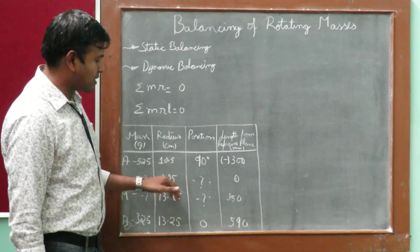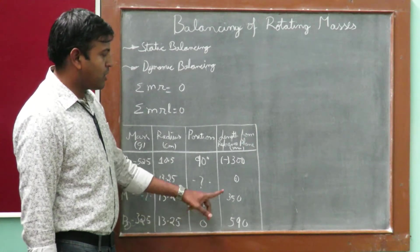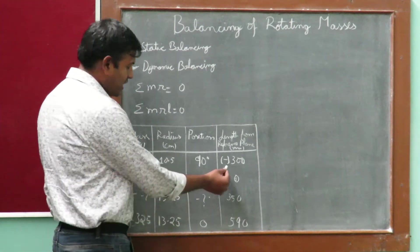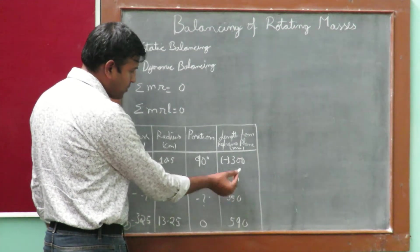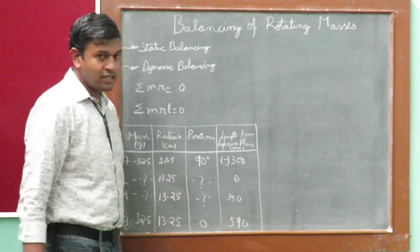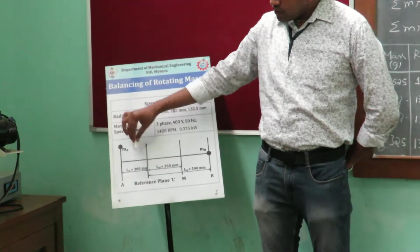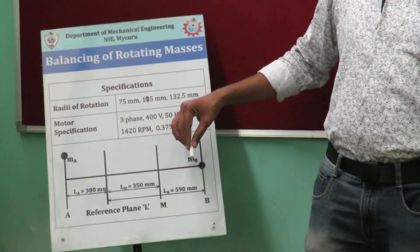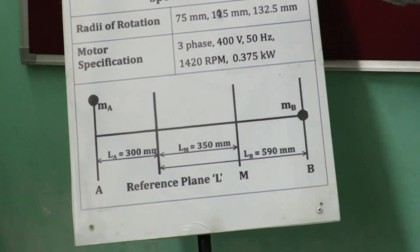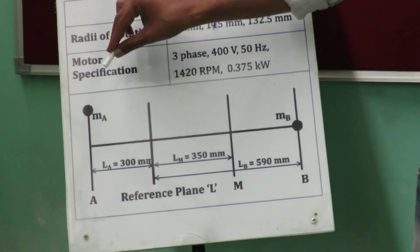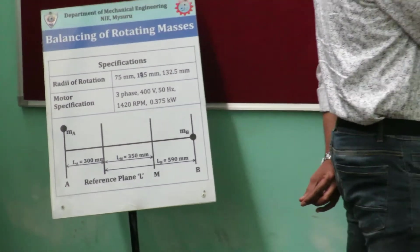We know the position of the two known masses A and B. A is placed at 90 degrees from the reference B. We make B as 0. The position of the planes is 300 for A, 350 for M to L, and 590 millimeters from B to L. The reason we take a negative sign here is that masses on the left-hand side of the reference plane generate moments in the opposite direction to masses on the right-hand side. Since we have one mass on the left-hand side, we make that mass negative.